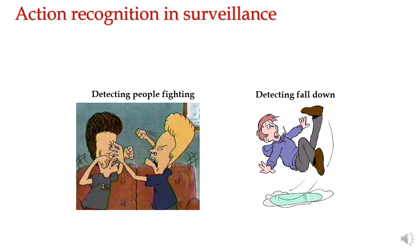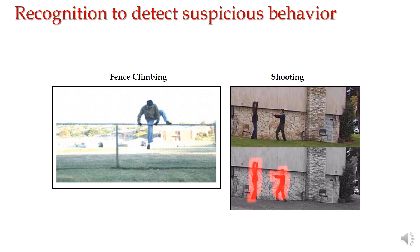Monitoring crowded cities, fighting detection, and fall detection are important applications. Notably, fall detection should ideally go beyond recognition — can we detect a fall before it happens? If a fall is sickness-related, symptoms may appear hours earlier, and body sensors could potentially provide feedback. Sudden falls without prior health indicators are also important. Detecting suspicious behavior is another key application.